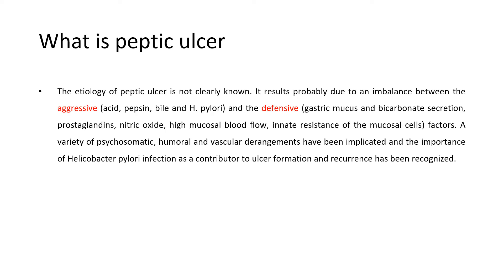The aggressive factors include acid, pepsin, bile, and H. pylori. The defensive factors include gastric mucosa, sodium bicarbonate secretion, prostaglandin, nitric oxide, high mucosal blood flow, and innate resistance to mucosal cells.